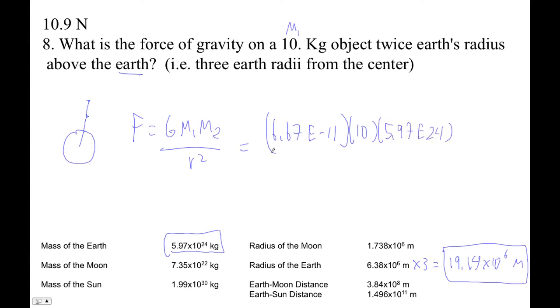And then that's divided by 18.14. Pardon the improper scientific notation. 6.67E minus 11 times 10 times 5.97E24 divided by the answer I just got. Square that thing. Do I have these all right? I think so. 10.86, 10.9. 10.9 Newtons.